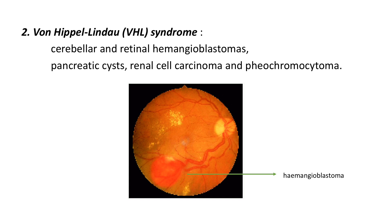Von Hippel-Lindau syndrome, or VHL syndrome. In this case you see cerebellar and retinal hemangioblastomas. The picture here shows a huge reddish tumor growing from the blood vessel — this is called a hemangioblastoma, typically seen in VHL syndrome. You also see pancreatic cysts, renal cell carcinoma, and pheochromocytoma.